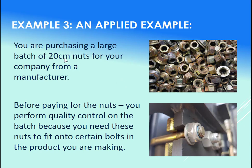They need to be just the right size. So in this case, let's say they need to be 20 centimeters in diameter. So before you pay for a batch of anything that you're having produced, you should perform quality control. This is where the normal distribution comes in.